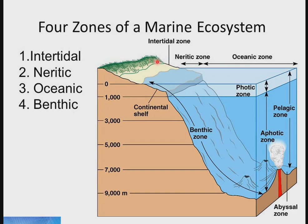The second zone is the neritic or littoral zone. This zone extends from the shoreline to the edge of the continental shelf, to a depth of about 200 meters. The zone is constantly underwater, receives plenty of sunlight, and is very rich in nutrients. It is the main site for commercial fish harvest. Organisms here include plankton, seaweed, sea turtle, crayfish, tilapia, fish, and dolphin.